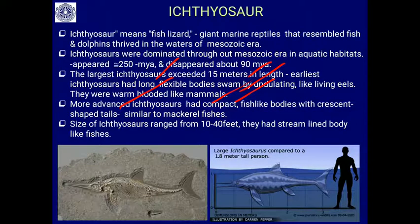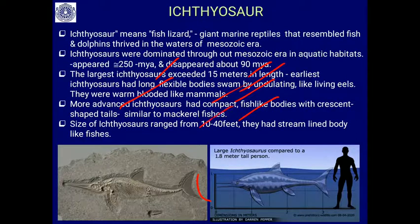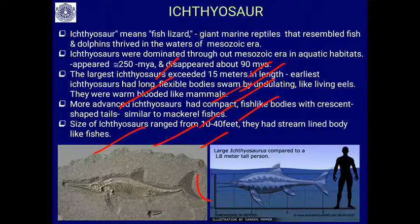The early forms had a fish-like body, while later forms in the Cretaceous period were more dolphin-like. More advanced ichthyosaurs had a compact fish-like body with a crescent-shaped tail, similar to mackerel. The size of the ichthyosaur ranged from 10 to 40 feet in length. They had a streamlined body resembling fish — somewhere in between fish and dolphins or whales — but remember they are lung-breathing reptiles, not fish.